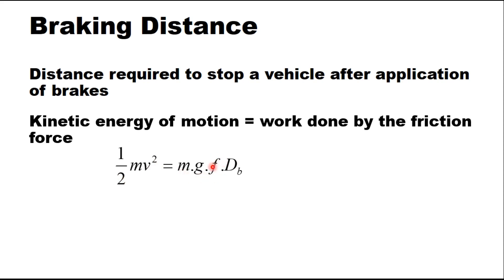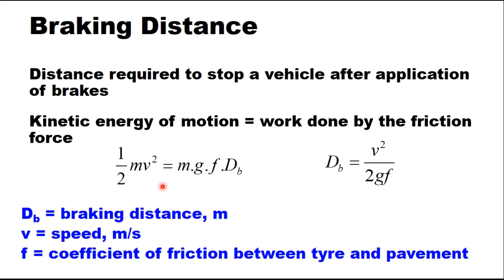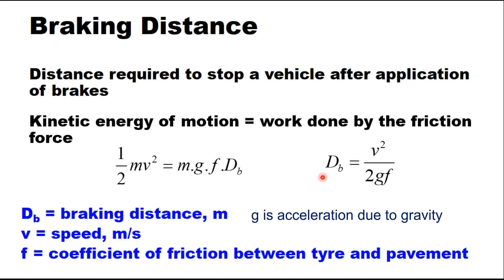If f is the coefficient of friction between tyre and pavement, then m×g×f is the friction force. If the braking distance is db, then the work done equals the kinetic energy, giving the equation: db = v²/(2gf), where v is the speed in meters per second, db is the braking distance in meters, and f is the coefficient of friction between tyre and pavement.